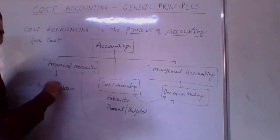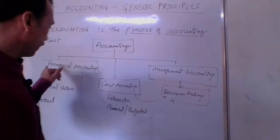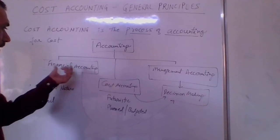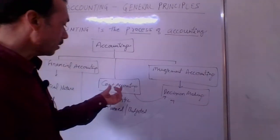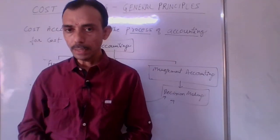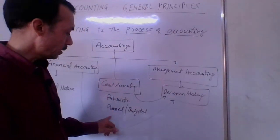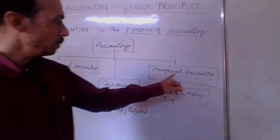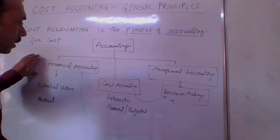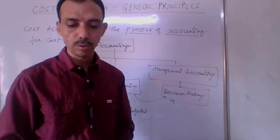To summarize: accounting is divided into three parts — financial accounting, cost accounting, and management accounting. Under financial accounting, we first spend the amount and then record the transaction, making it historical in nature and based on actual expenses. Under cost accounting, it is futuristic — we plan what to produce and budget the amount. Under management accounting, we take resources and information from both financial and cost accounting to make decisions.